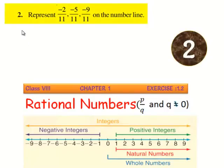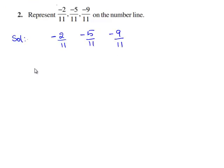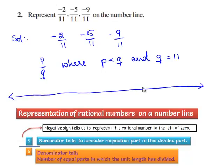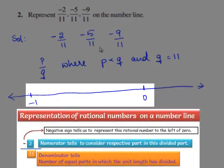Now, let us move on to the next question. The question is: represent minus 2 by 11, minus 5 by 11, and minus 9 by 11 on the number line. The rational numbers that we have to represent on the number line are minus 2 by 11, minus 5 by 11, and minus 9 by 11. The given 3 rational numbers are of the form p by q, where p is less than q and q is equal to 11 for all 3 rational numbers. Also, the given 3 rational numbers are negative rational numbers. Therefore, they lie on the left side of 0 on the number line. We shall mark 0, minus 1, and 1, and divide 0 to minus 1 into 11 equal parts because the denominator of all the given 3 rational numbers is 11.